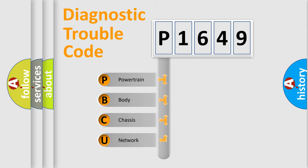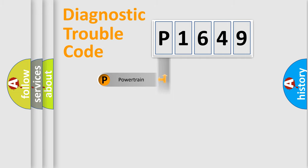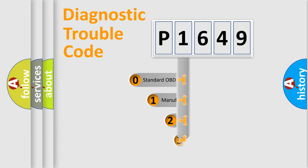We divide the electrical system of an automobile into four basic units: powertrain, body, chassis, and network. This distribution is defined in the first character of the code.